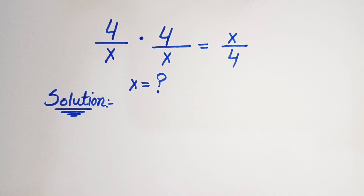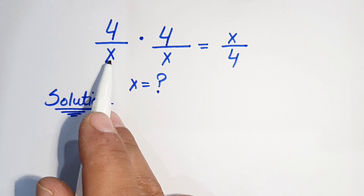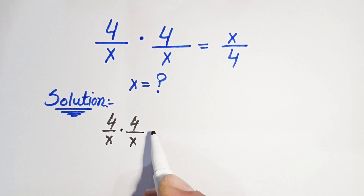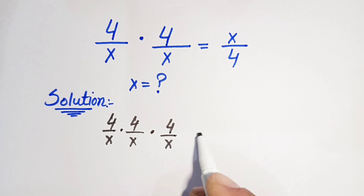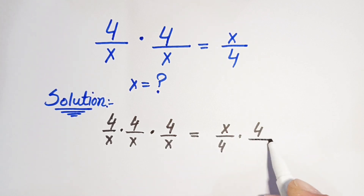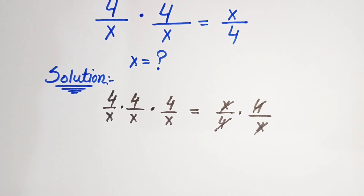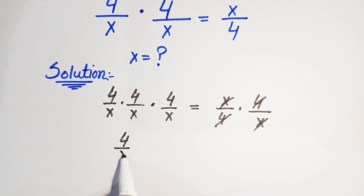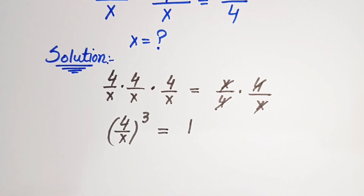We have to solve this problem for the value of x. On the left hand side we have 4 over x times 4 over x. If we multiply both sides by 4 over x, on the right hand side x over 4 times 4 over x, the 4 and x cancel out to give 1. So we get a times a times a which is a cubed, meaning 4 over x all cubed equals 1.